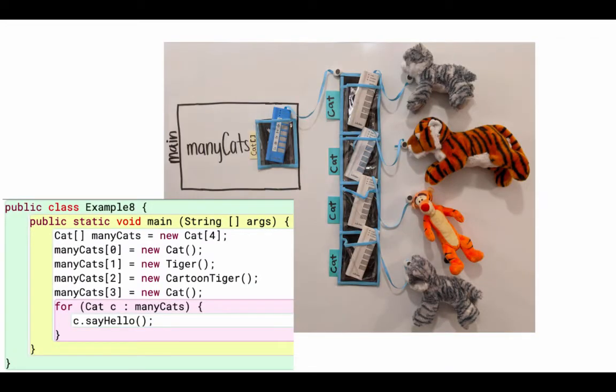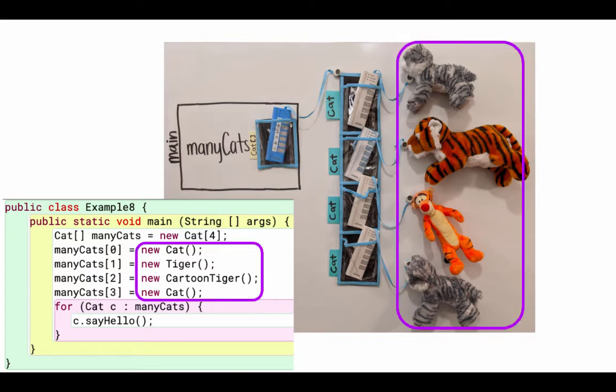Okay, let's look at a picture of this. So again, we have the cat array many cats. It's referencing a new cat array with length four. And remember, at this line of code, we wouldn't have any of those remote controls yet, they would all just be null. But you can see they're each of type cat. Then you can see that we set those array elements to a new cat, a new tiger, a new cartoon tiger, and a new cat.